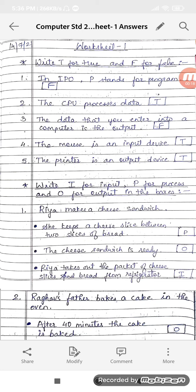In IPO, P stands for program. So the answer will be false. Why? Because P stands for process, that is IPO is input, process, and output.